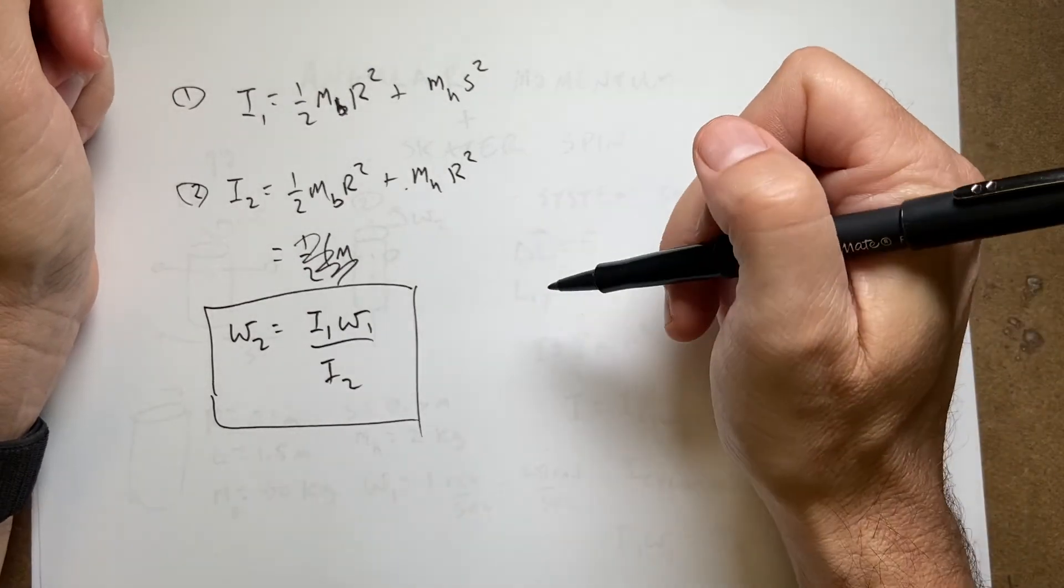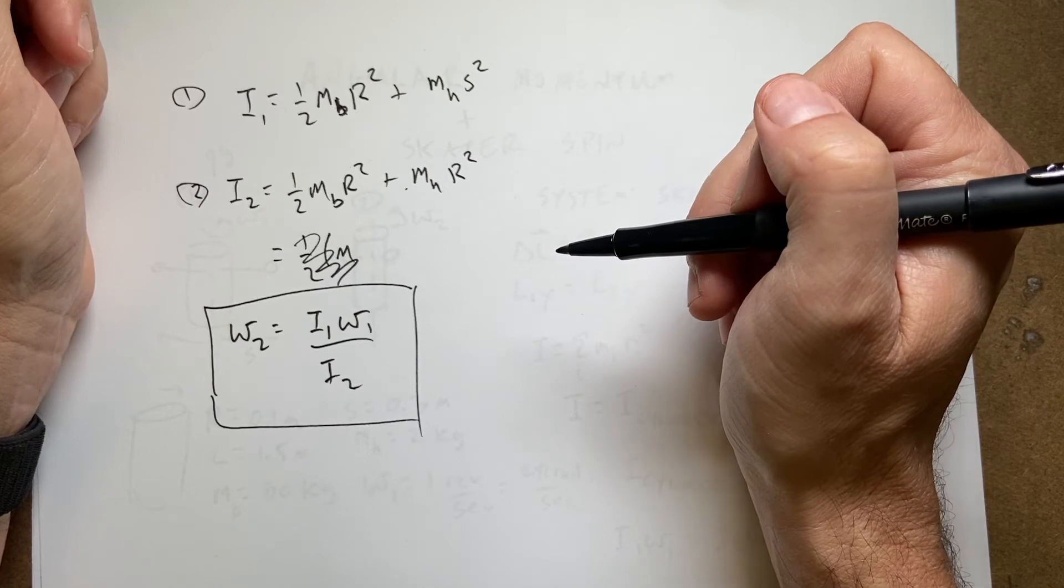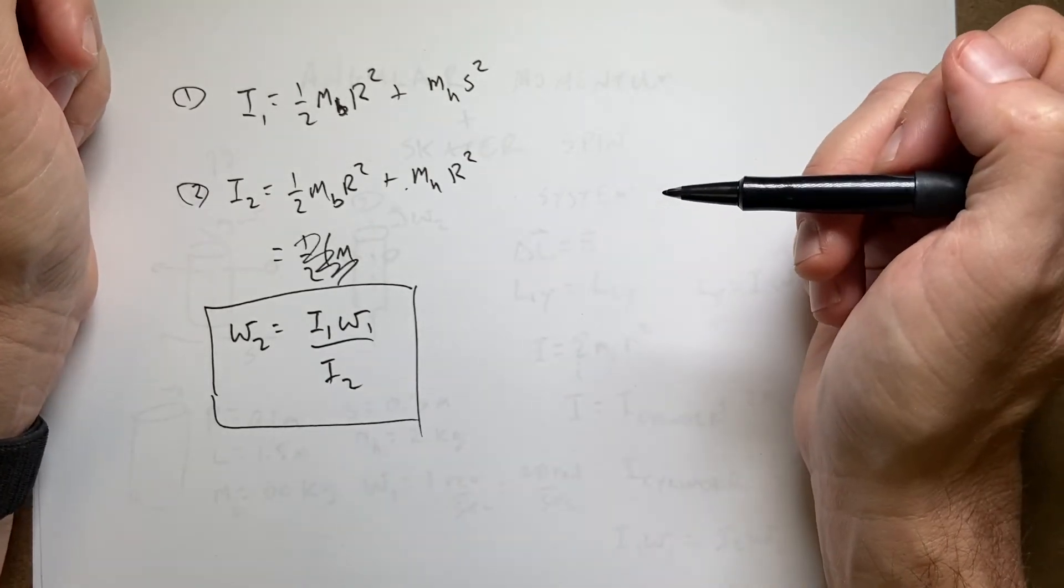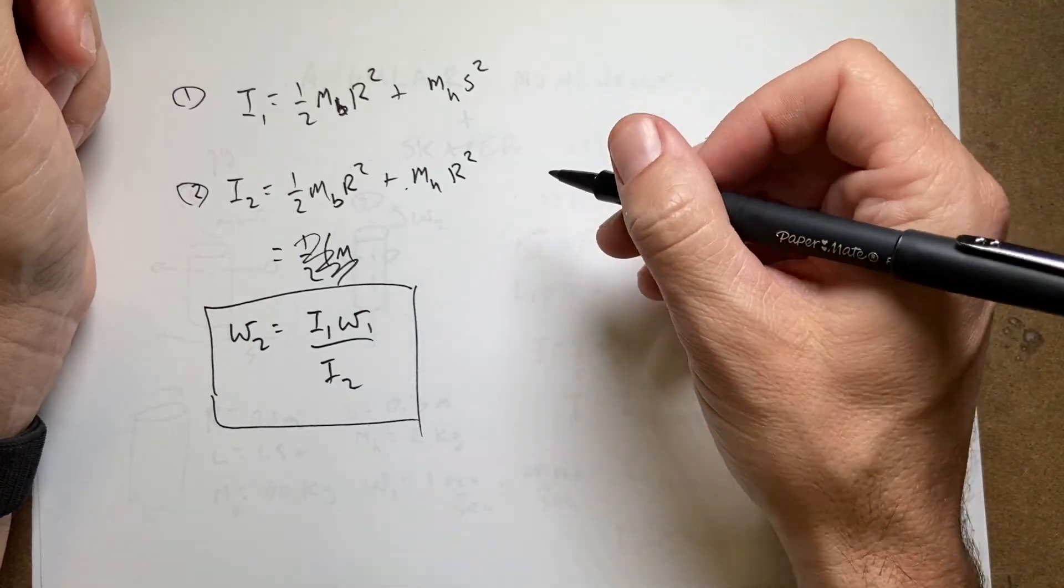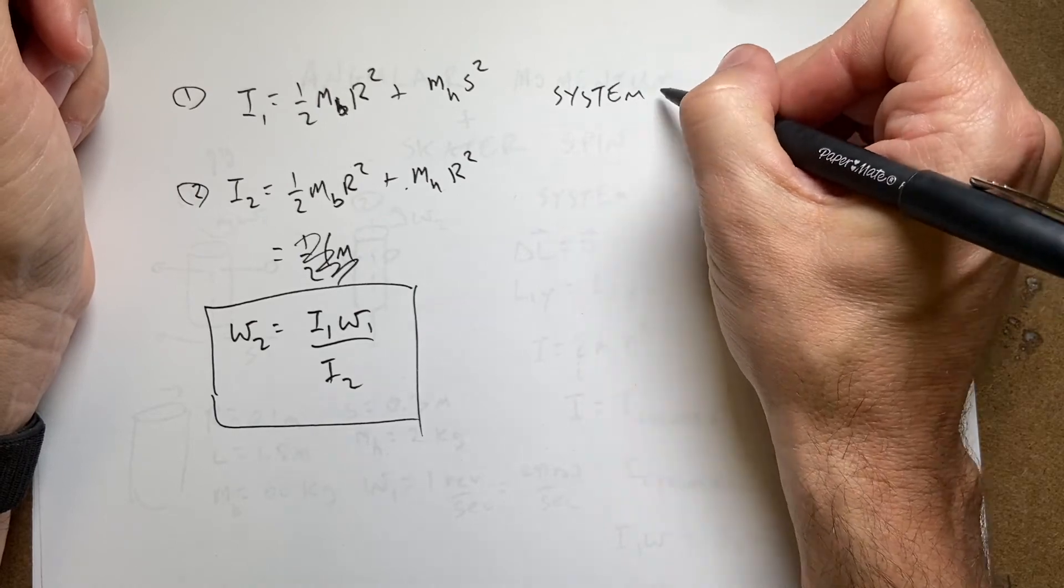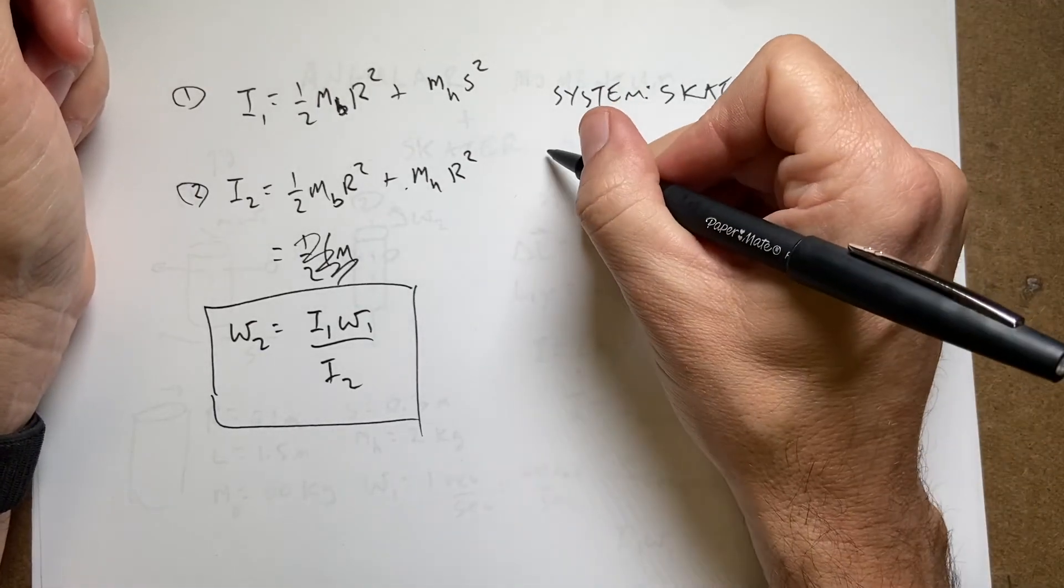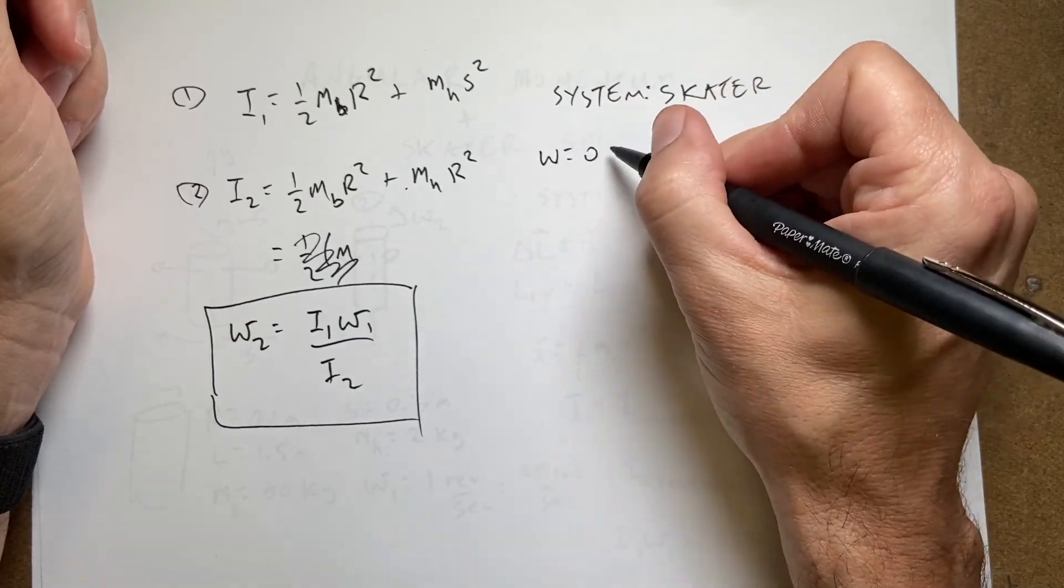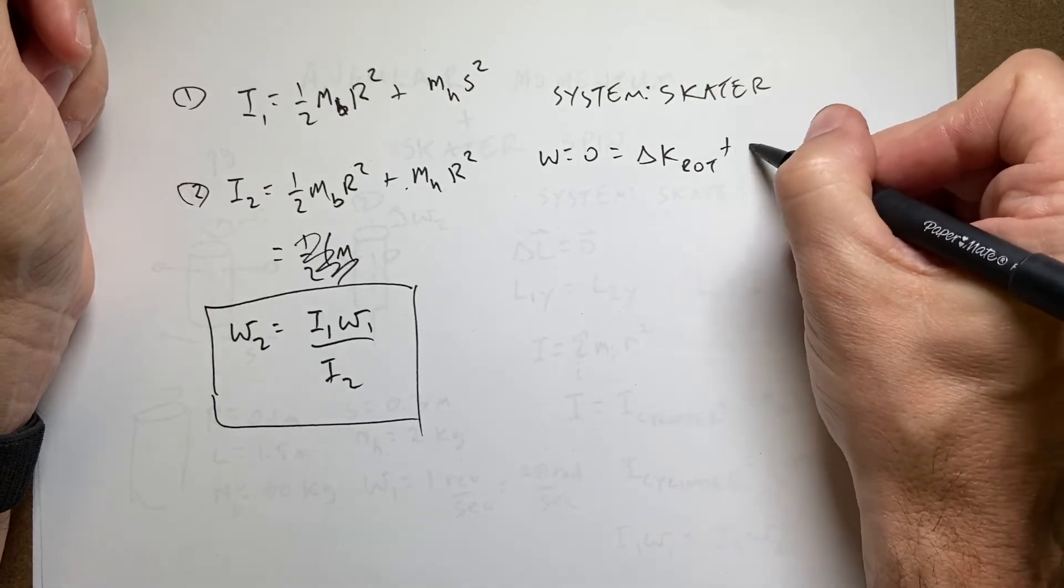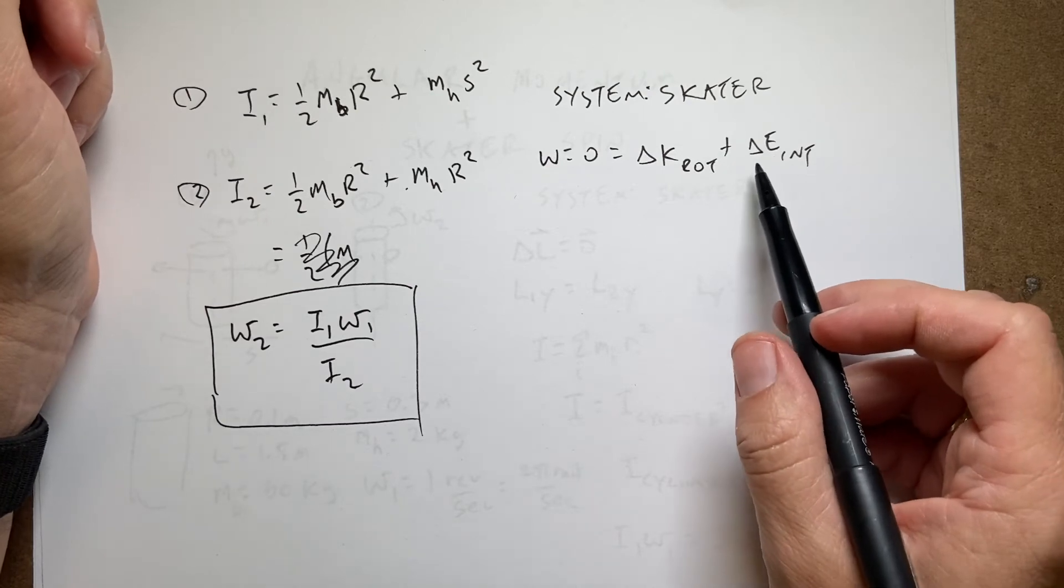Now the next question is how much work does this person have to do in order to pull the arms in or do your arms just fling in themselves? Okay so I can say the system again is the skater. And there's no work done on the skater so work equals zero equals the change in rotational kinetic energy plus the change in internal energy where that's the amount of energy the person exerts themselves.